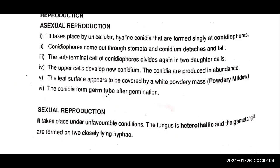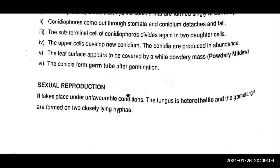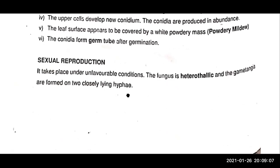The conidia form a germ tube after germination. Sexual reproduction occurs under unfavorable conditions. The fungus is heterothallic and the gametangia are formed on two closely lying hyphae.